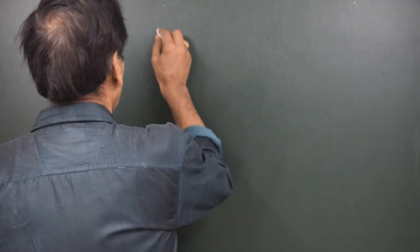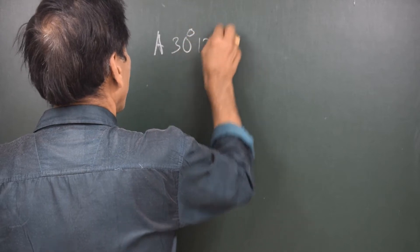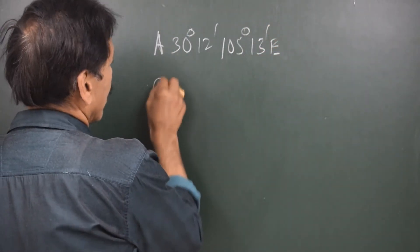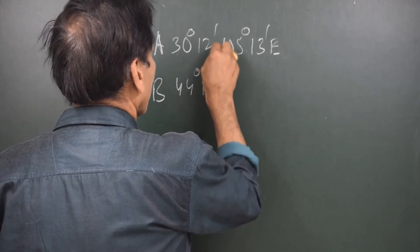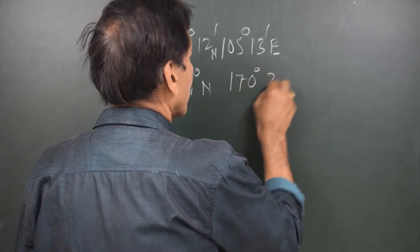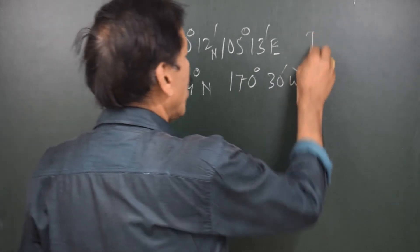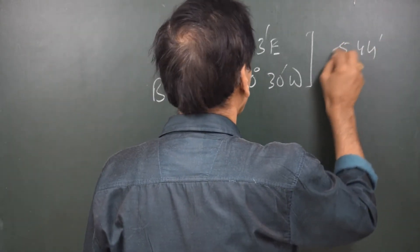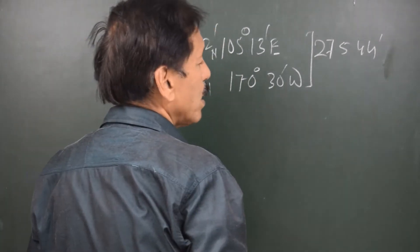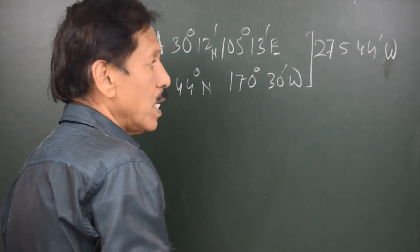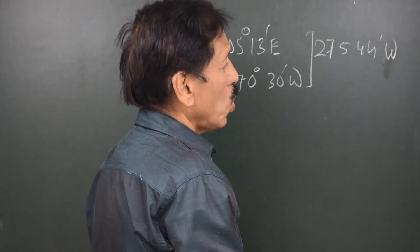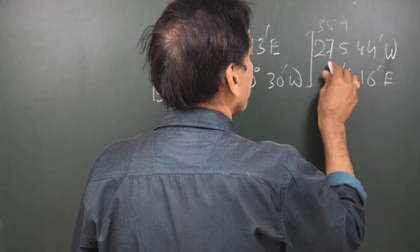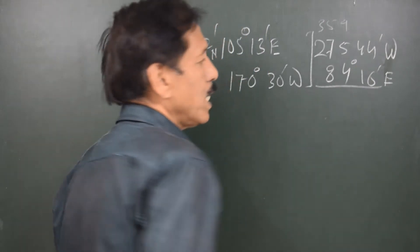Let's take a case where A is 30 degrees 12 minutes and 105 degrees 13 minutes East, and B is 44 degrees North and 170 degrees 30 minutes West. The D long — different names so we add — becomes 275 degrees 44 minutes West. But D long cannot be more than 180 degrees, so subtract from 360 and change the name: 84 degrees 16 minutes East is the D long.